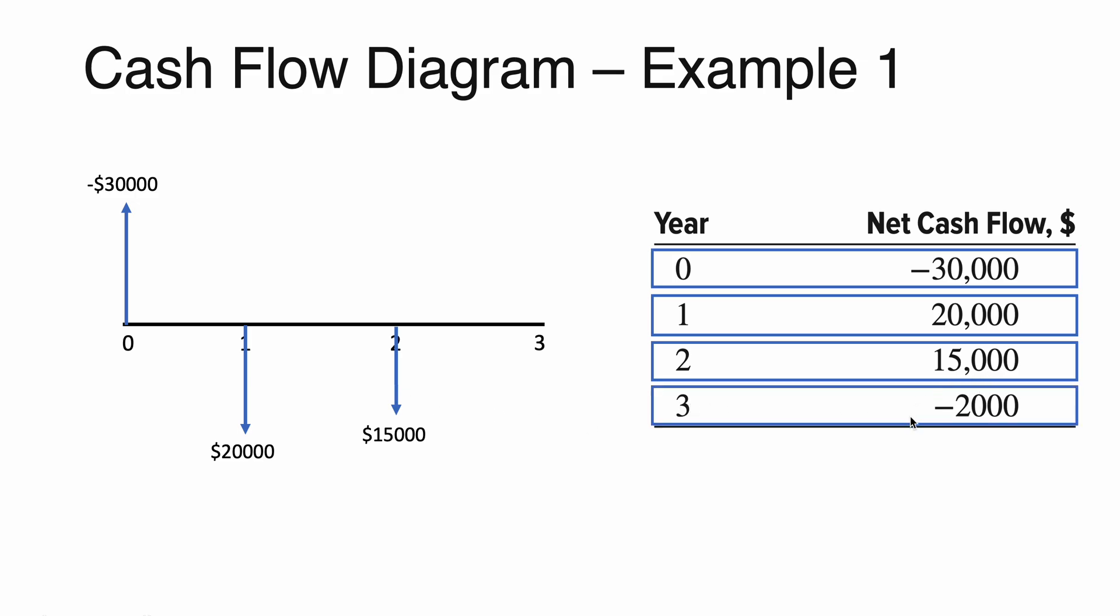Lastly, for year 3, it's a negative $2,000, so we draw an arrow that points outwards. Now notice the arrows have different sizes, and this is to indicate how small or how large the values going in and out are. So obviously $30,000 is much bigger than $2,000, and that's why the arrow is much longer.